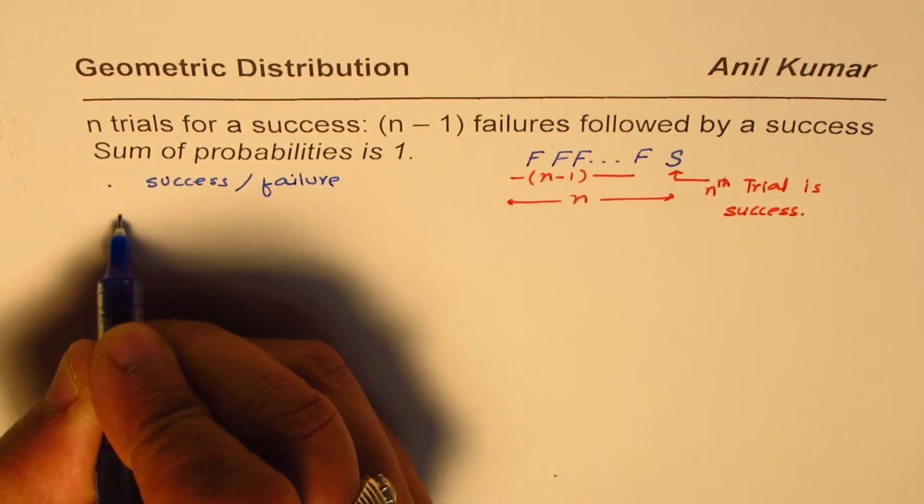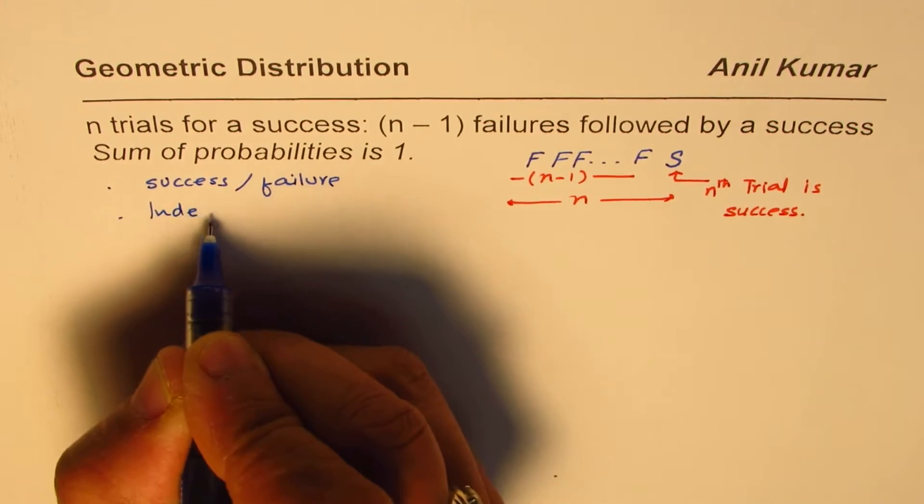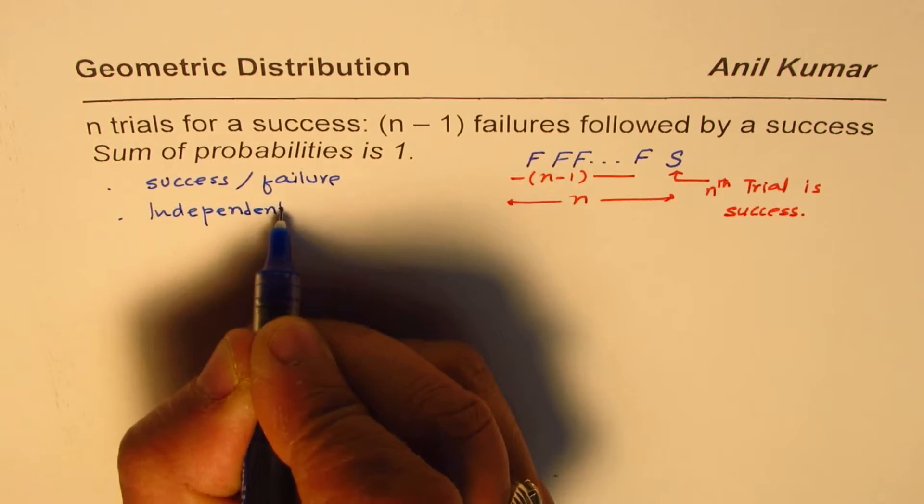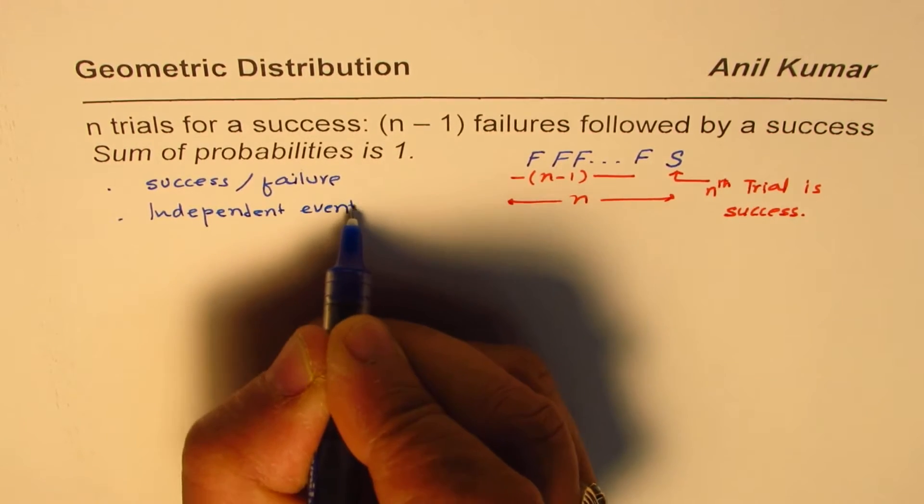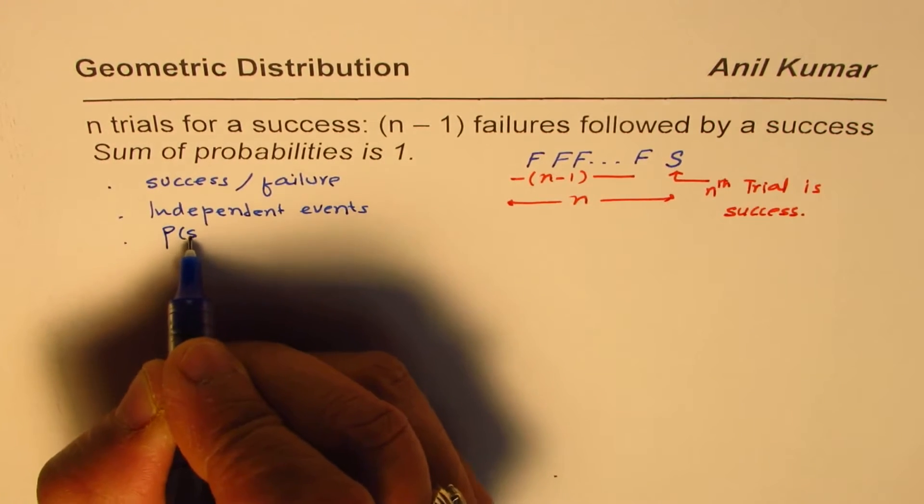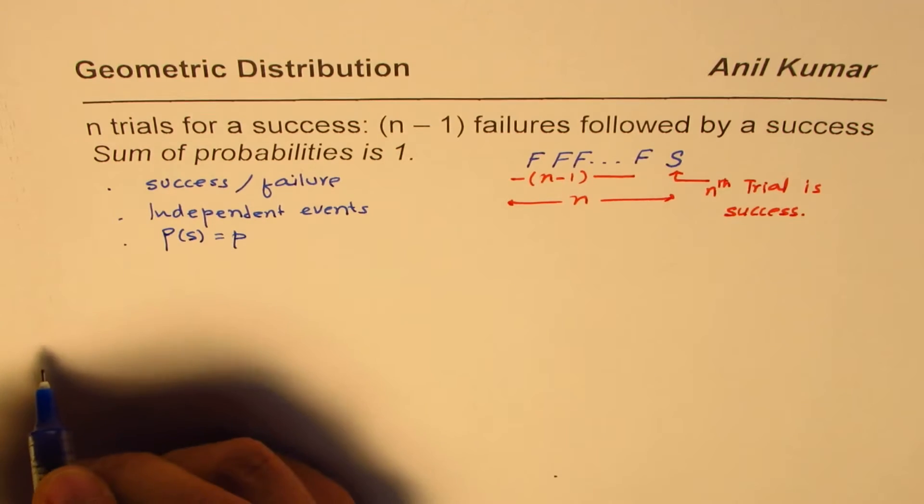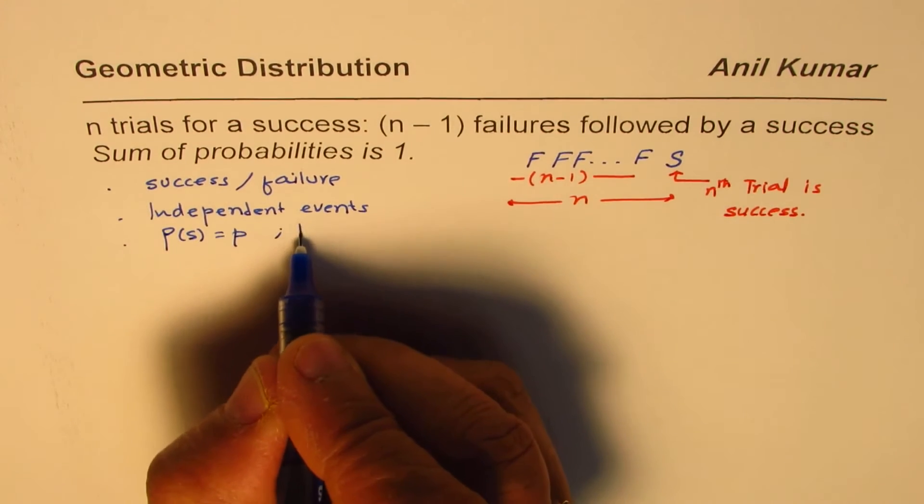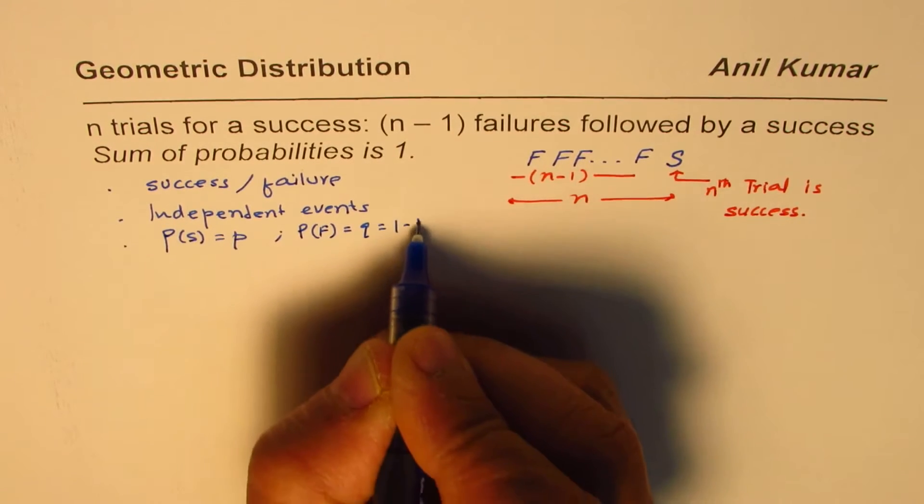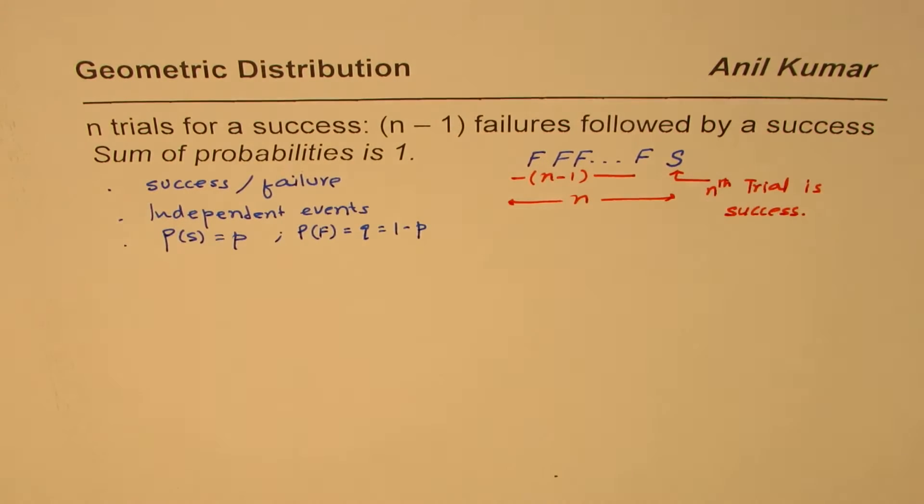And all are independent events. In this trials, probability of success will remain same. So we will say probability for success is lowercase p. And we'll use probability for failure as q, which is 1 minus p.